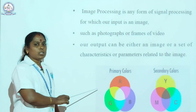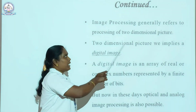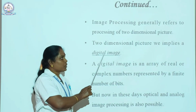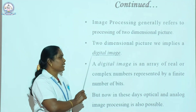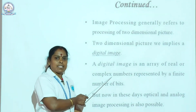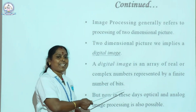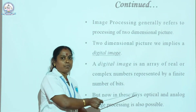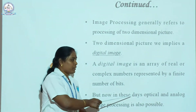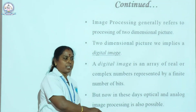Image processing uses these two types of color methods. Image processing generally refers to the rearrangement of two-dimensional pictures. Two-dimensional pictures here imply digital images. Digital images are saved in array format. The array may be real numbers, composite numbers, or anything represented by a finite number of bits. Nowadays, a lot of partial images may be referred to in optical and analog image processing.